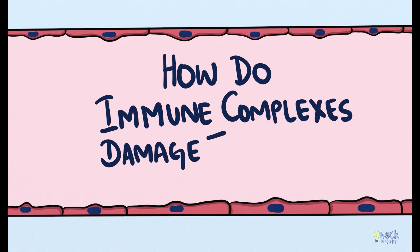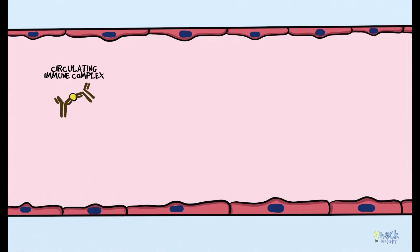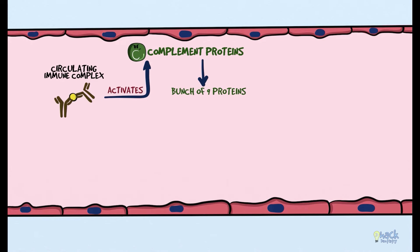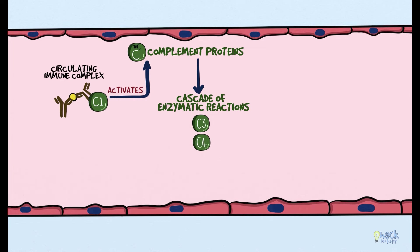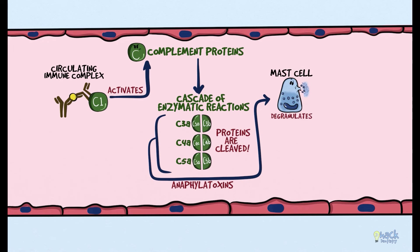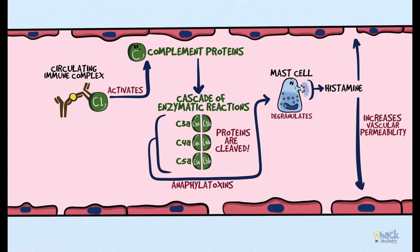Immune complex-mediated tissue damage begins when complement proteins are activated by circulating complexes. Complement proteins are a group of nine proteins, C1 through C9, which when activated trigger a cascade of enzymatic reactions. This is triggered when complement protein C1 attaches to the antibody of the immune complex. During the cascade, complement proteins C3, C4, and C5 are cleaved, producing C3a, C4a, and C5a — called anaphylatoxins — which stimulate mast cells to degranulate and release histamine. Histamine increases vascular permeability, which further helps immune complexes deposit and attach to the basement membrane of blood vessels.